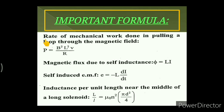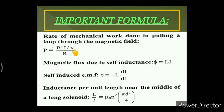The rate of mechanical work done in pulling a loop through a magnetic field is given as P = B²l²v/R, where B is the uniform magnetic induction, l is the length of the conductor or loop, v is the velocity, and R is the collective resistance of the loop or conductor.